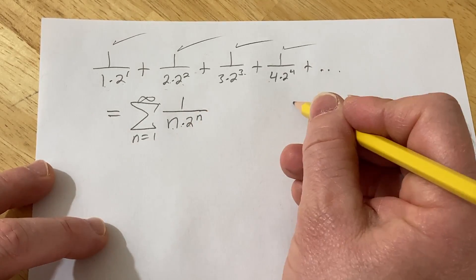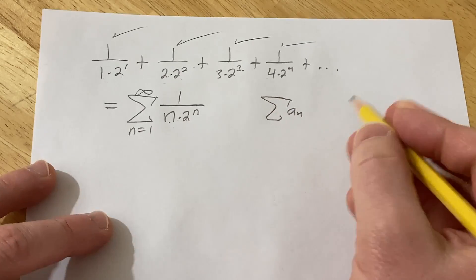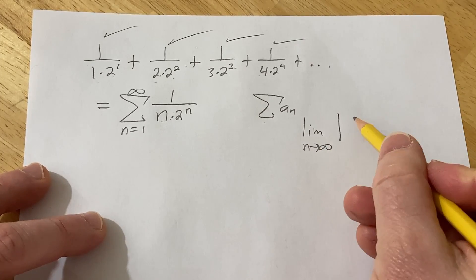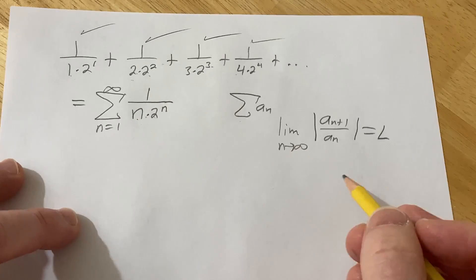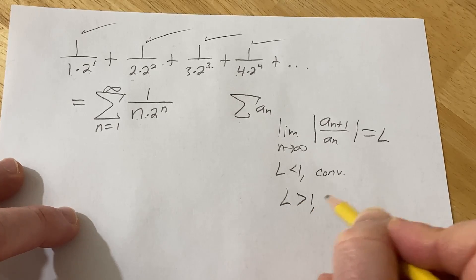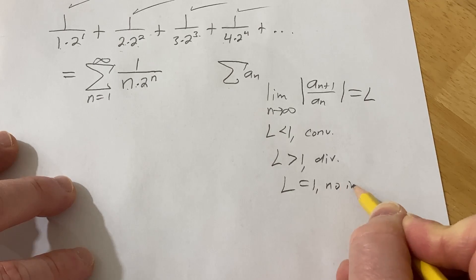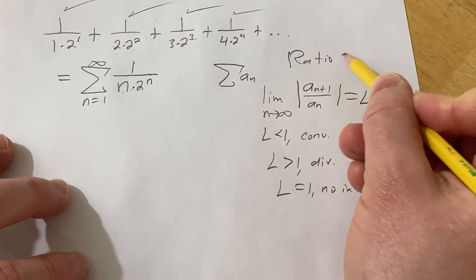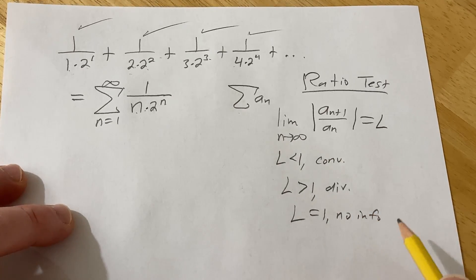The ratio test says if you have an infinite series, say like this, and I'm just going to omit where it starts, just assume it's infinite. And you take the limit as n approaches infinity of the absolute value of a sub n plus one over a sub n, and you get L. There's three cases. So if L is less than one, you have convergence. If L is bigger than one, you have divergence. If L is equal to one, you have no information. So this is a very powerful test called the ratio test. And this is used a lot when studying power series, when you're looking for something called the interval of convergence.